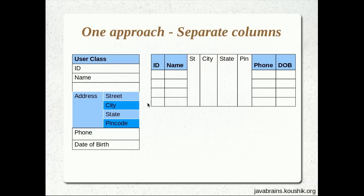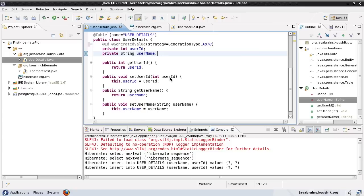We'll look at examples of how we can have an entity inside another entity later. But for now, if you understand what a value object is and how it can be associated to an entity, that should suffice. This is a value object, and this is the approach we're going to take — having the columns separately for this value object, which works fine because there's no point in having an address as a separate table. It has to be associated with the entity, so why not have it in the same table? Now let's look at how we implement this in Hibernate.